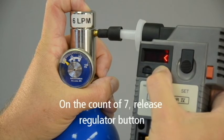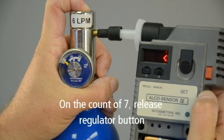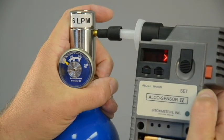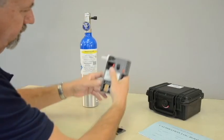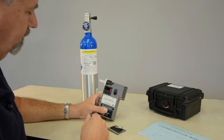On the count of 7, release the regulator button. Gas must be flowing through the mouthpiece when the manual button is pressed. Remove the AlkaSensor 4 and mouthpiece from the regulator.